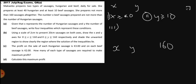Number three says she prepares not more than 160 sausages altogether — that means X and Y together should not exceed 160. Not more than means they should be equal to 160 or less than 160. So we say X plus Y is less than or equal to 160.